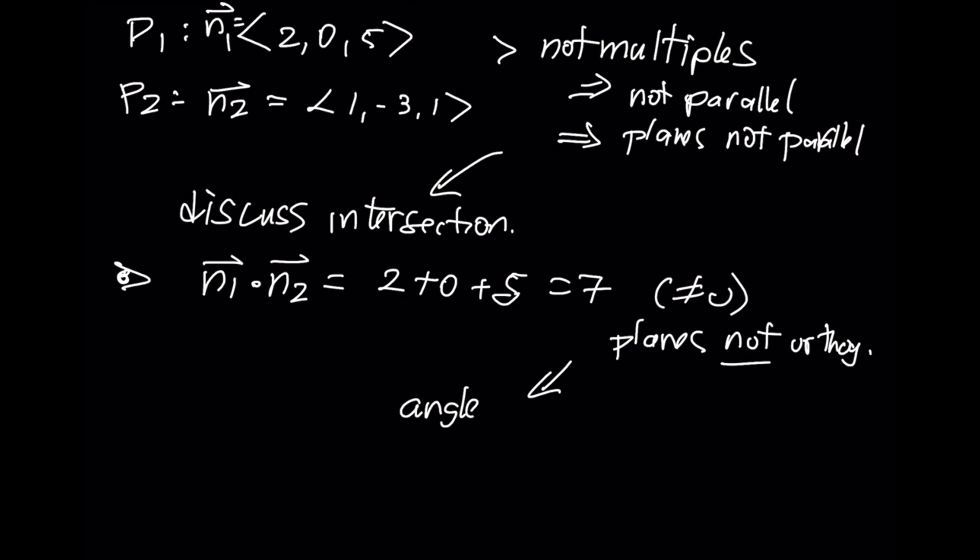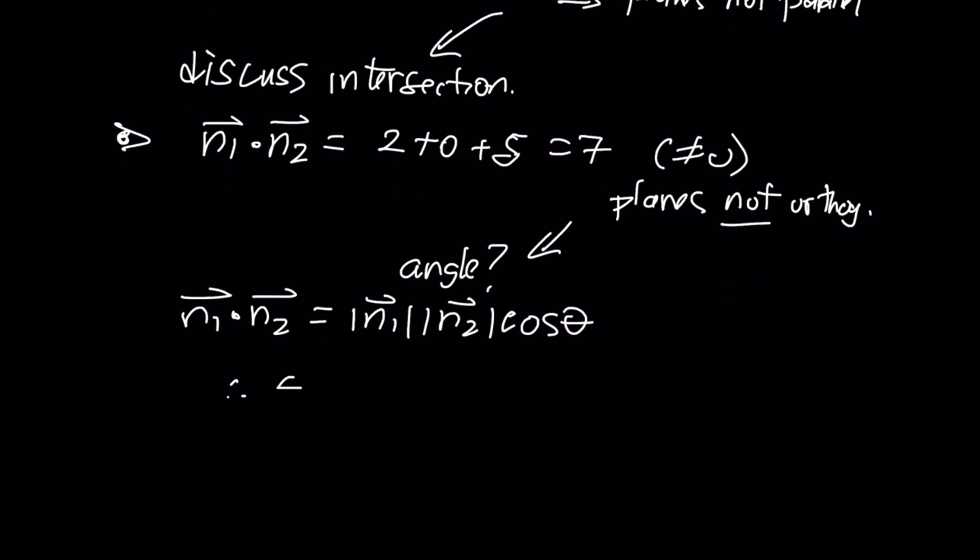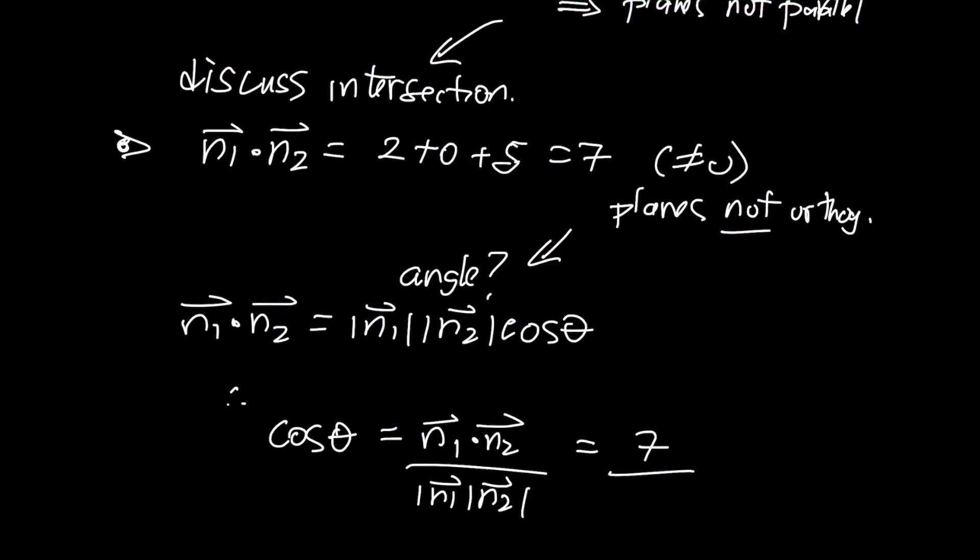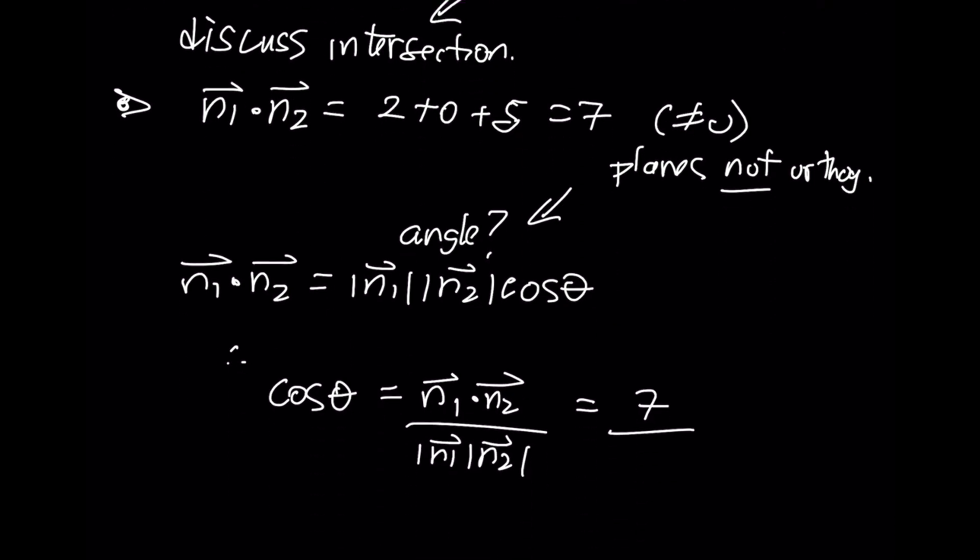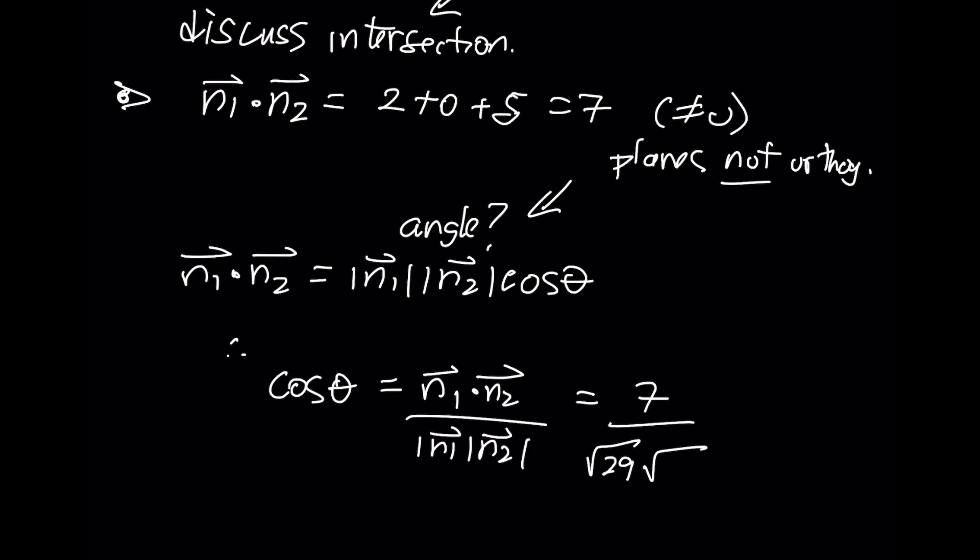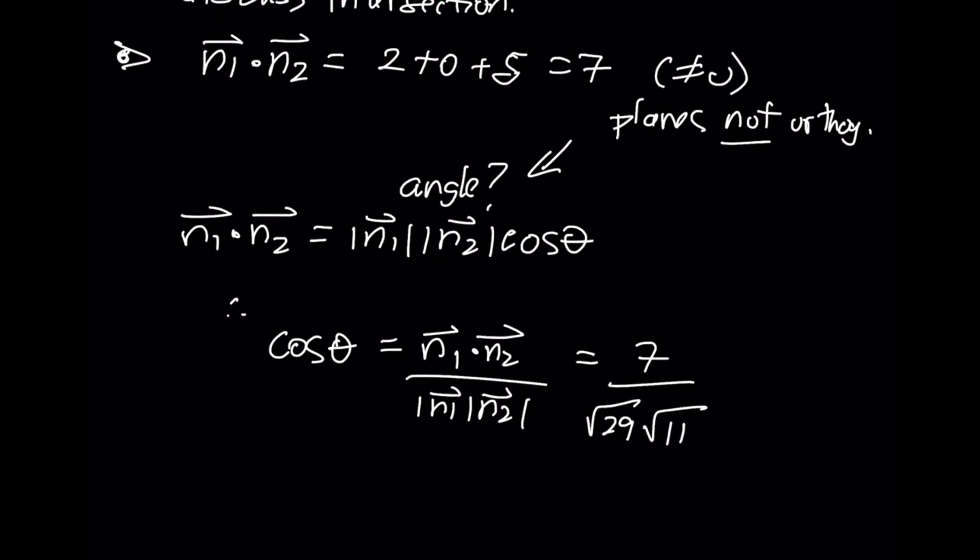Remember that from the dot product, I had a geometric definition or a geometric interpretation. And that geometric interpretation allowed me to have a cosine. The cosine of theta here could be written in terms of that dot product. We've already computed that dot product. The first vector n₁ is going to have a length of √29, while the second vector n₂ is going to have a length of √11. That means the angle is the inverse cosine of that number, which is approximately 66.93 degrees.